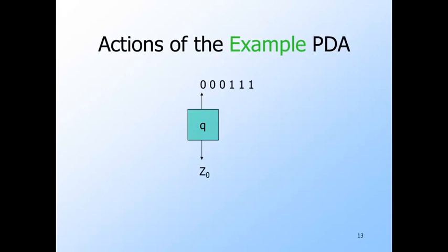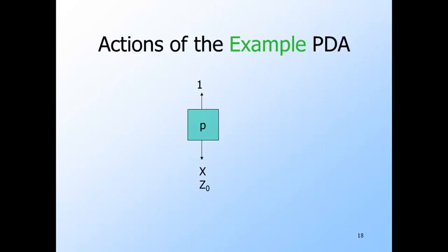Initially, it is in state Q with just Z0 on the stack — that's the initial configuration. For the first move, we consume the first zero and replace Z0 by X Z0 on the stack, with X on top. We consume another zero and replace the top X by two X's, and the same thing happens again. Now the first one is consumed; we transition to state P and pop the top X. Staying in state P, we consume another one and pop another X, and again. Now all the input is gone but we have Z0 on top of the stack, so with epsilon input we go to state F and accept the input string 0, 0, 0, 1, 1, 1.